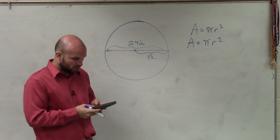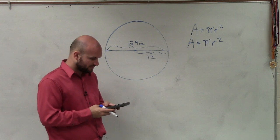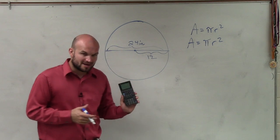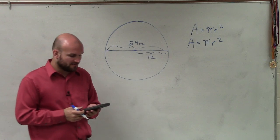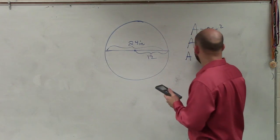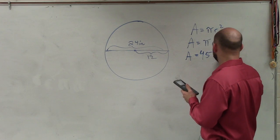So what I'm going to do is I'm going to do 12 squared, which is 144, and then multiply that by pi, which I'm going to use in my calculator. I'm not going to round to 3.14. And that gives me area equals 452.38.